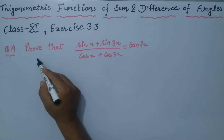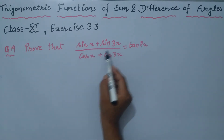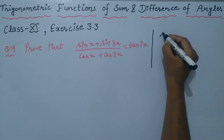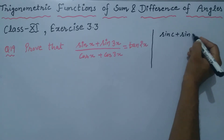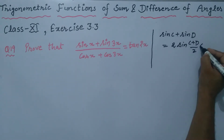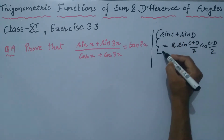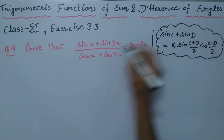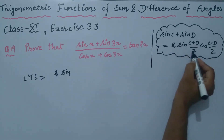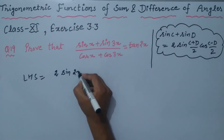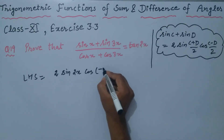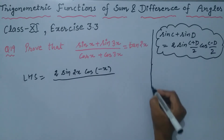Question number 19: prove that sin x plus sin 3x, whole divided by cos x plus cos 3x, is equal to tangent of 2x. The numerator is of the form sin C plus sin D, which equals 2 sin (C+D)/2 into cos (C-D)/2. Numerator becomes 2 sin (x+3x)/2 = 2x, into cos (x-3x)/2 = minus x.